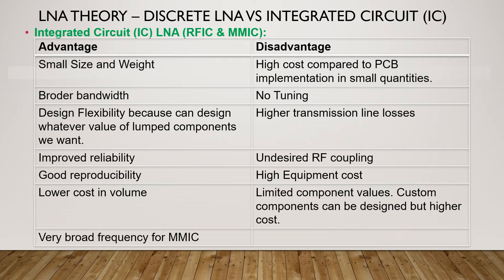The advantages of integrated circuit LNA over discrete LNA are smaller size and weight, broader bandwidth, design flexibility because we can design whatever value of lumped component we want, improved reliability, good reproducibility, lower cost in volume, and very broad frequency range for MMIC. The disadvantages of IC LNA versus discrete LNA are high cost in small quantity, no tuning, higher transmission line losses, undesired RF coupling, high equipment costs, limited component values available, and custom components can be designed but at higher cost.